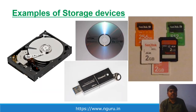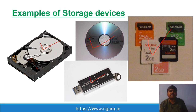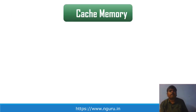The storage device examples — hard disk, DVD, USB, memory — all fall under secondary storage or secondary memory. So far we have seen primary memory and secondary memory. Now there is also cache memory.